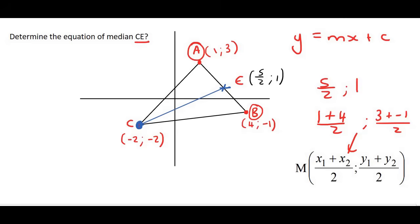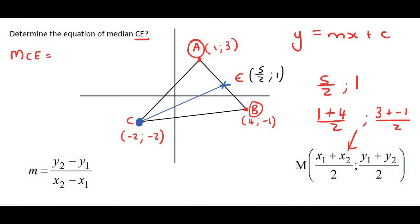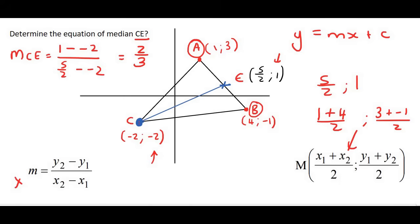Now we could work out the gradient of line CE using the gradient formula. I'm going to use point E as my first one, so I'm going to go 1 minus negative 2, then 5/2 minus negative 2. If you work this out you end up with 2/3. So that is the gradient of line CE.